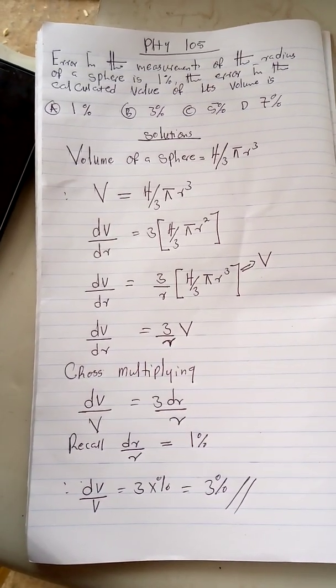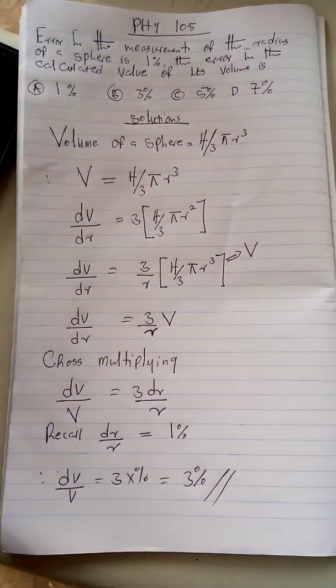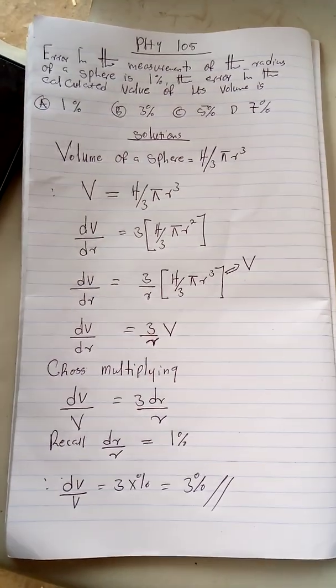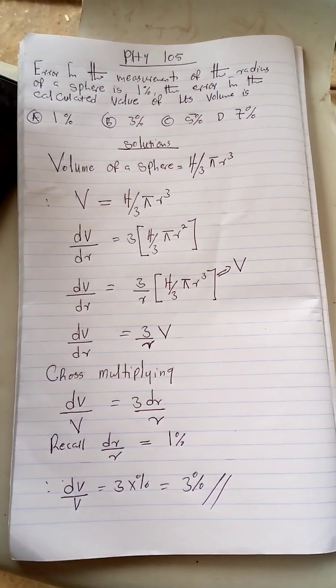When you cross multiply, you have dV over V equals 3 dr over r. From the question you can see that the dr over r is 1 percent. Now the essence of doing this is in a situation whereby you have other percentages.